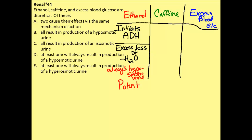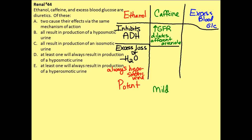With caffeine, it works by increasing the GFR, and it mainly does that by dilating the afferent arteriole. That's a pretty mild effect because there are certainly mechanisms in place to compensate for small increases in GFR.